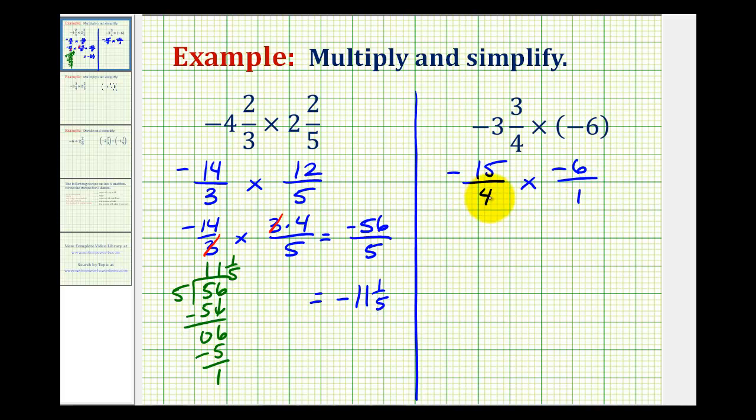Notice that four and six share a common factor of two. To show this, let's write this as negative fifteen over two times two, times negative six, we can write as negative three times two, all over one. Again, this step isn't necessary, but it is nice because you can actually see the common factors. Here, two over two simplifies to one.